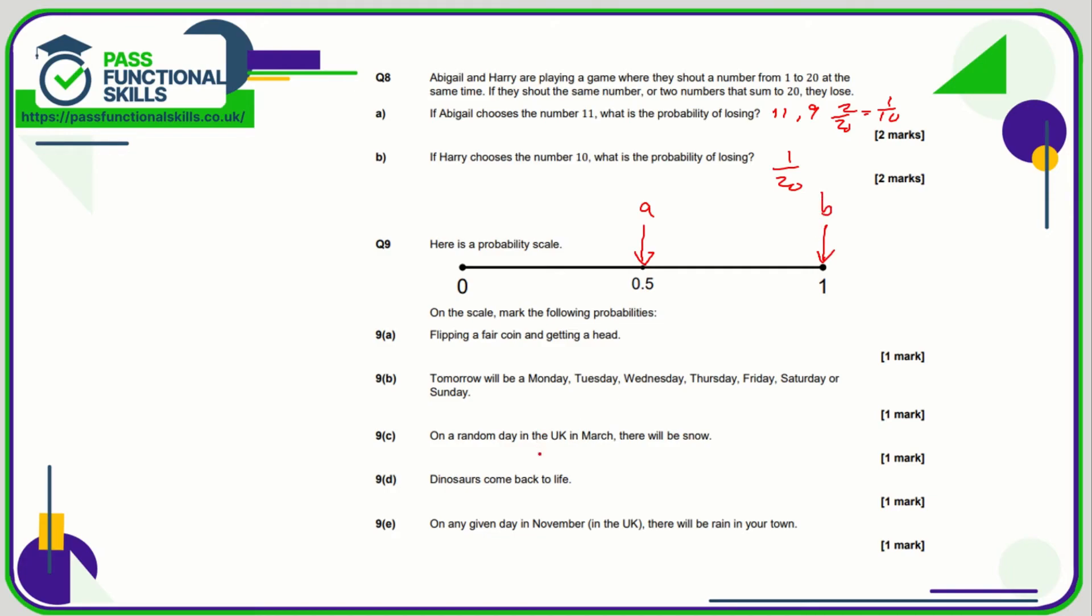On a random day in the UK in March there will be snow. Well, I suppose we don't get an awful lot of snow in the UK. So I know if we're going to get snow it's good chance it's going to be in March, but generally there are fewer snowy days than there are...